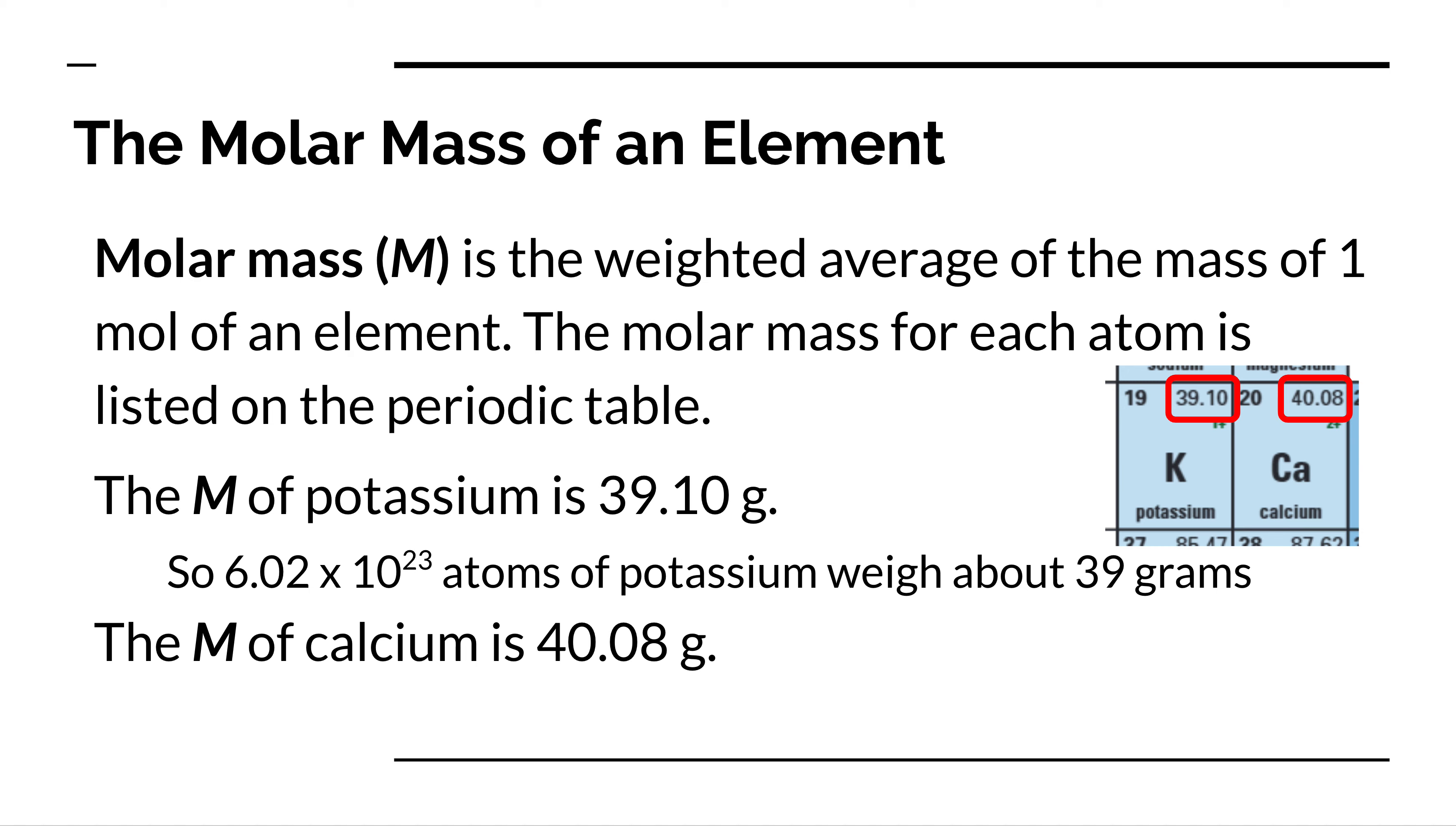In order to do this, we use something called molar mass. Molar mass has the symbol of capital M. It is what we call a weighted average, weighted by how common different isotopes with different masses are. And it tells us what the average mass of one mole of a substance is.